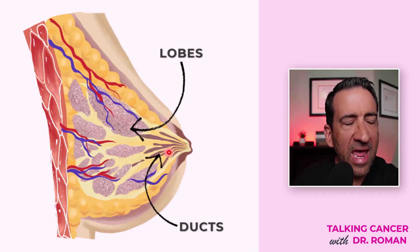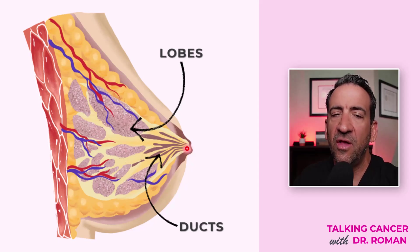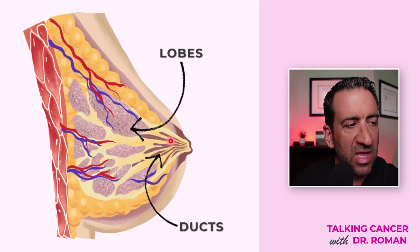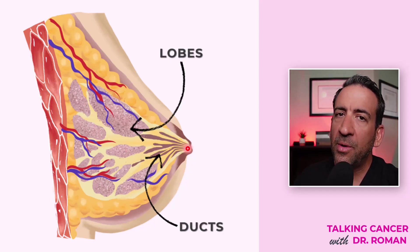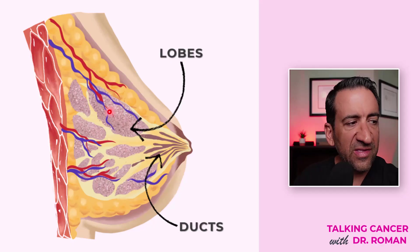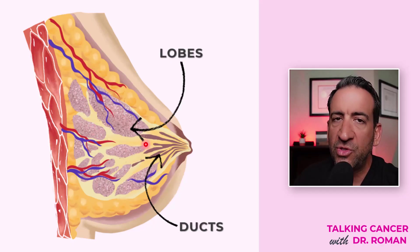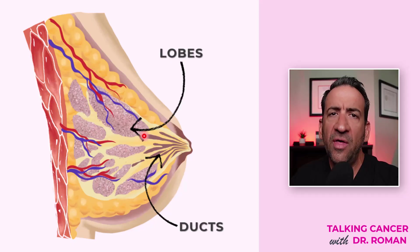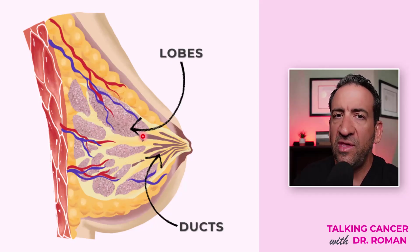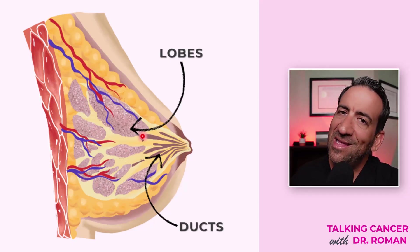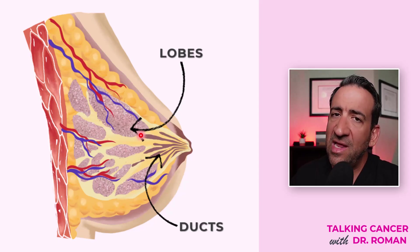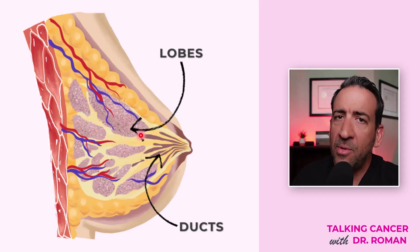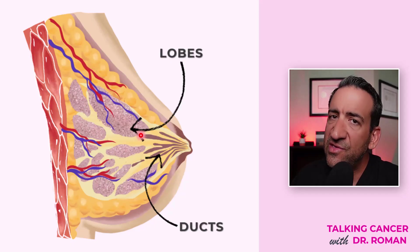When we talk about atypical ductal hyperplasia, it's because cells within the ducts start to become abnormal. Atypical lobular hyperplasia means the cells becoming abnormal are in the actual lobes or lobules of the breast. So it really depends on the anatomical location where these cells are becoming abnormal. The pathologist, when they do the biopsy, tells us whether this is atypical ductal hyperplasia, atypical lobular hyperplasia, or lobular carcinoma in situ.